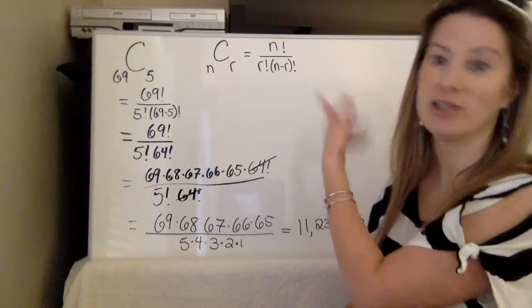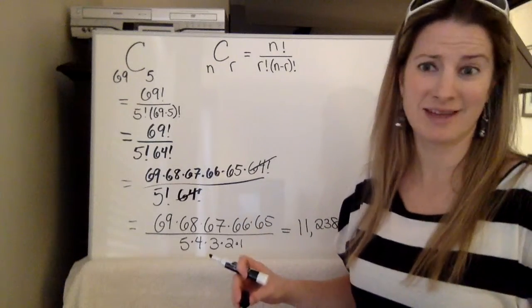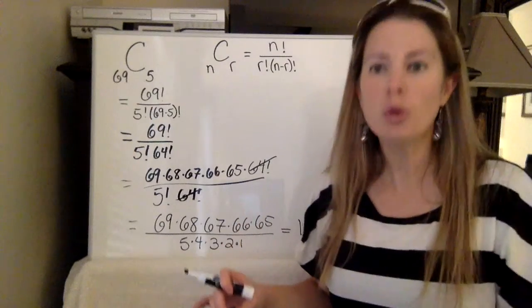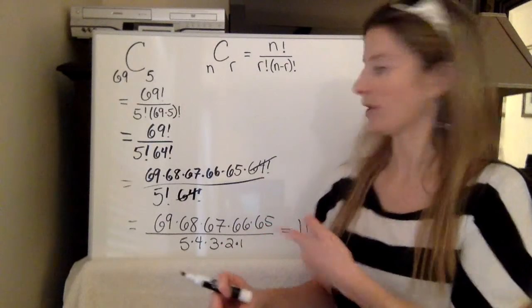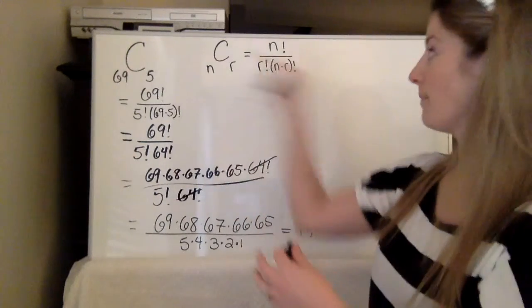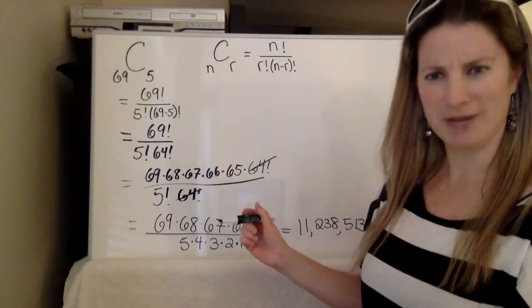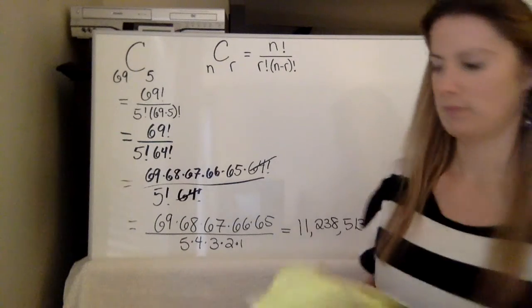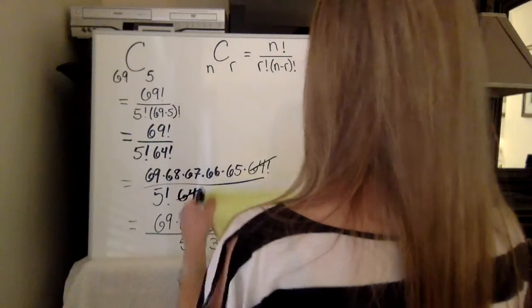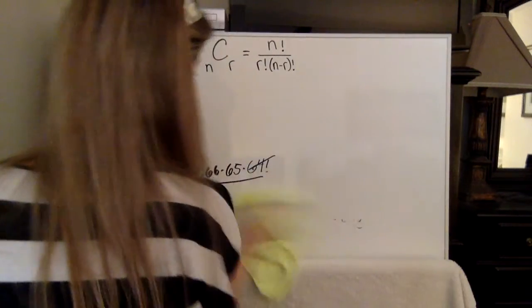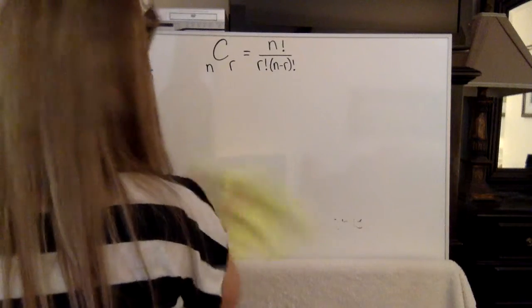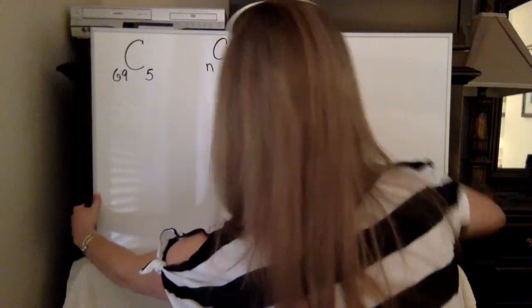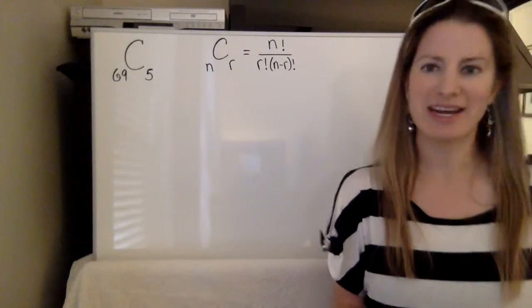Now we of course could memorize this formula and use it, but do we really know what it means? If we're just plugging numbers in and getting an answer, that doesn't necessarily show a true understanding of this probability problem. So I wanted you to see it done out just because some people might be like oh yeah the formula. But now let's talk about what it really means. So I'm going to erase this and let's talk about it in a different way.